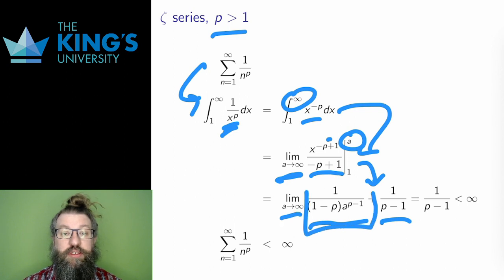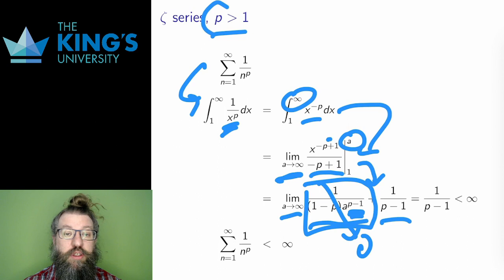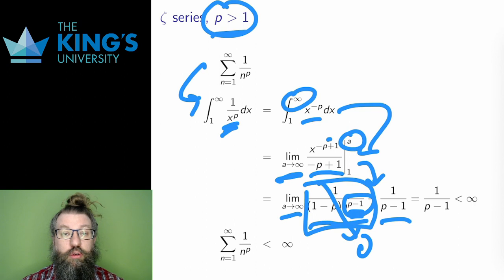The first term here in the limit is 0. This is where p greater than 1 is important. Without that fact, this part of the limit would not decay to 0. This exponent needs to be positive in the denominator, which means that p has to be strictly larger than 1. The remaining term is a constant, so the limit is finite. And that means that the series also converges.